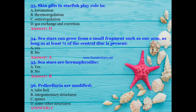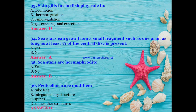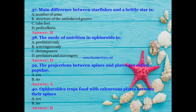Skin gills in starfish play a role in: locomotion, thermoregulation, osmoregulation, or gas exchange and excretion? The answer is D — gas exchange and excretion. Can sea stars grow from a small fragment such as one arm, as long as at least one-fourth of the central disk is present? Yes. Are sea stars hermaphrodite? No — sea stars are not hermaphrodite. Pedicellariae are modified into: tube feet, integumentary structures, or spines? The answer is C — spines.